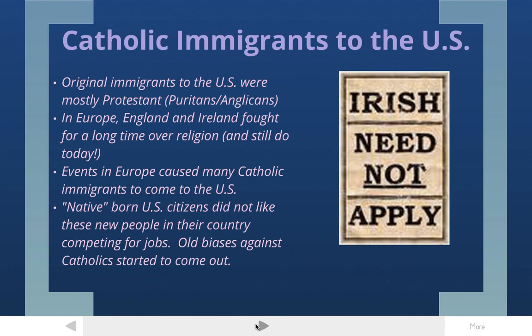The story begins back in Europe, actually well before the United States was a country. When the United States was first having its original immigrants coming over before the Revolutionary War, most of these immigrants were coming from England since it was an English colony. Most of the people in England were of the Protestant religion, meaning most of them were either Puritans or from the Anglican Church of England. In Europe there were a lot of different competing religious groups, but the main two were Protestants and Catholics.